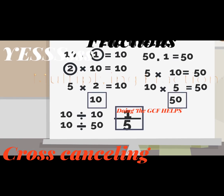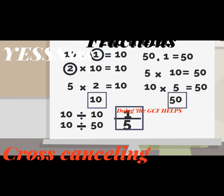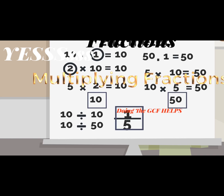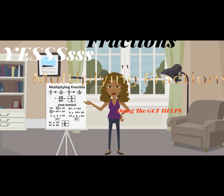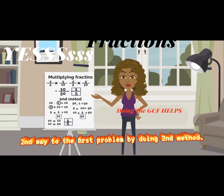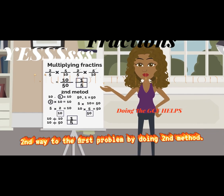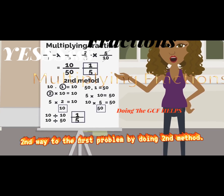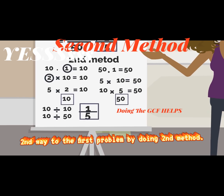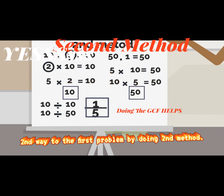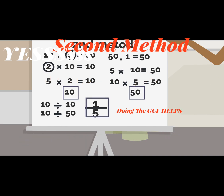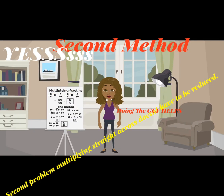The GCF is found by listing the multiples of 10 and 50. For 10: 1×10, 2×5, and 5×2 all equal 10, so I boxed 10. For 50: 5×10 and 10×5 equal 50, so I boxed 50. The GCF ends up being 10. So 10 divided by 10 equals 1, and 50 divided by 10 equals 5. That simplifies to 1 over 5 — that is the final simplified answer.